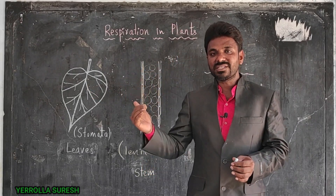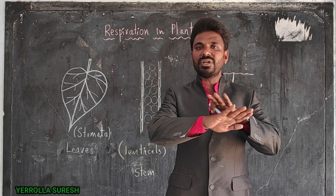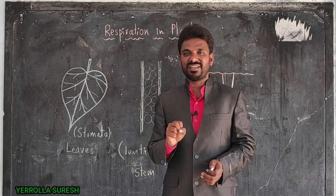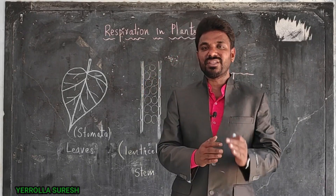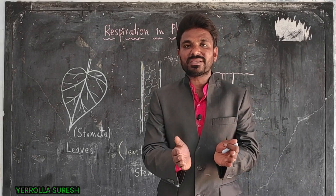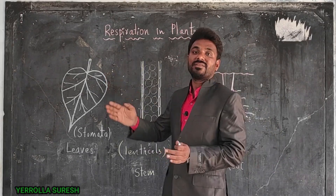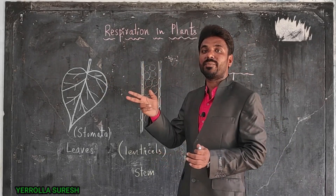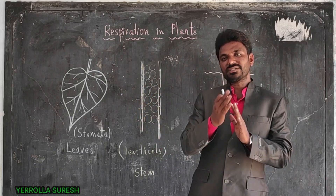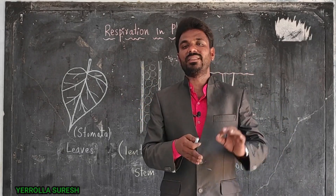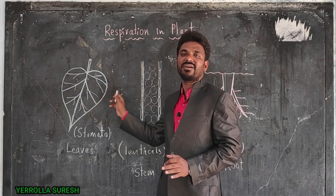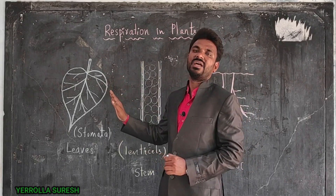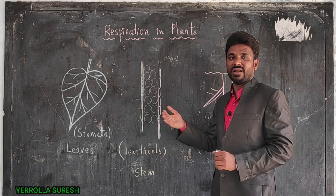Once oxygen enters the leaf, it is distributed to all the cells by the process of diffusion. All cells receive oxygen and when they utilize it, they produce carbon dioxide. The concentration of carbon dioxide inside the leaf increases, so carbon dioxide moves from the higher-concentrated area inside the leaf out into the atmosphere through the stomata. The process of diffusion plays a key role in the exchange of gases in leaves through stomata.